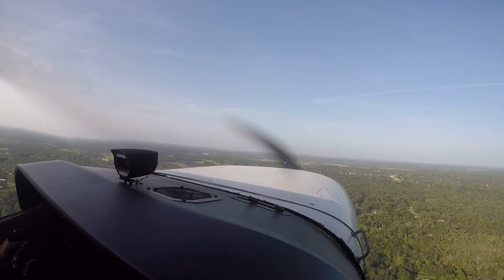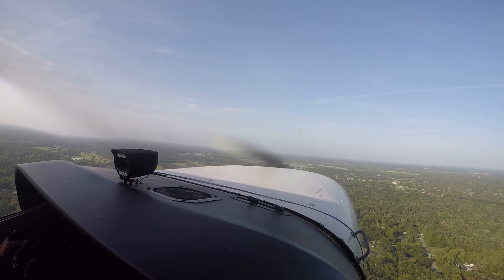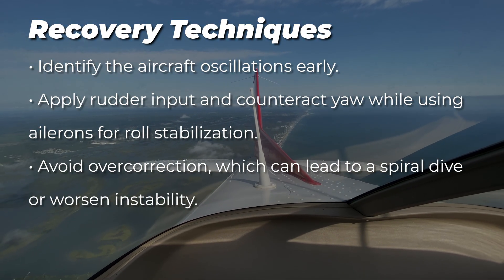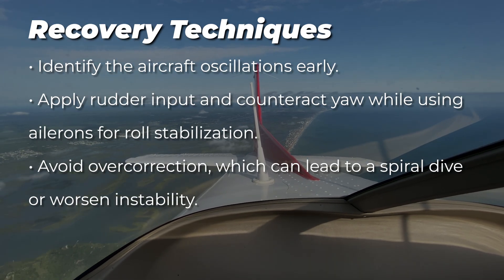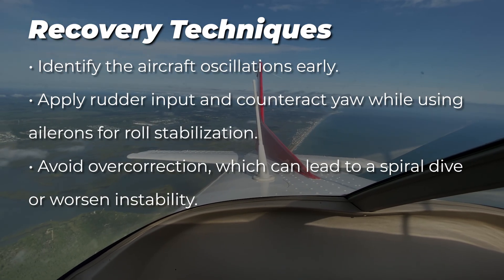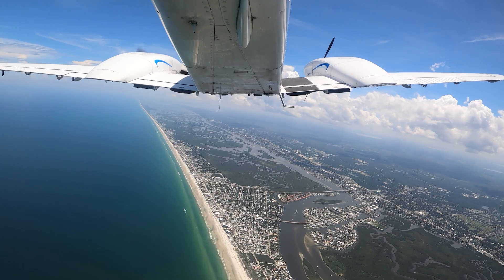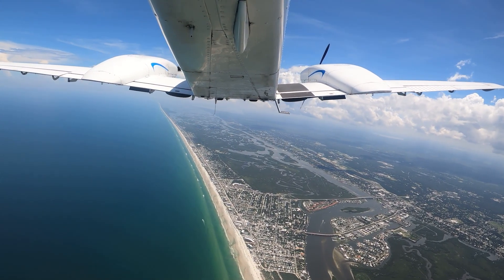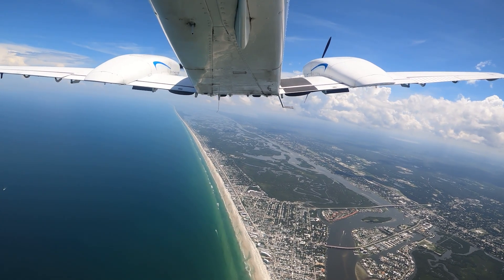At EPIC, we teach effective recovery techniques for Dutch roll using coordinated aileron and rudder control. We train pilots to identify aircraft oscillations early, apply rudder input to counteract yaw while using ailerons for roll stabilization, and avoid overcorrection, which can lead to a spiral dive or worsen instability. Proper pilot training, aircraft design, and system redundancy help ensure that Dutch roll, while potentially dangerous under certain conditions, can be managed effectively.